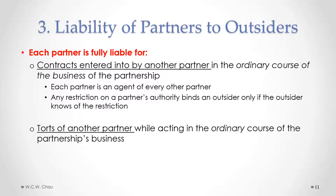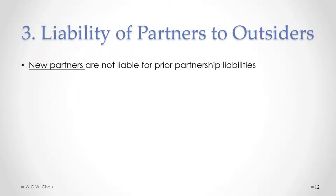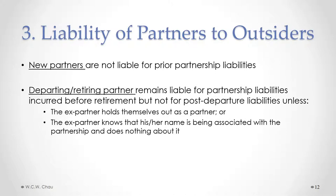Each partner is also fully liable for the torts of any other partner, as long as the tort arose while acting in the ordinary course of the partnership. When a new partner is added to an existing partnership, that new partner is not liable for any prior liabilities. Conversely, when a partner leaves the firm, that partner remains liable for partnership liabilities incurred before departure, but is not liable for any post-departure liabilities unless they hold themselves out as a partner or know their name is still being associated with the partnership and do nothing about it.